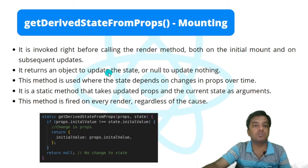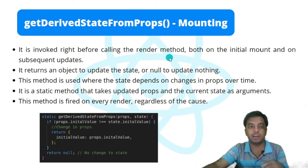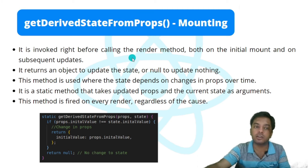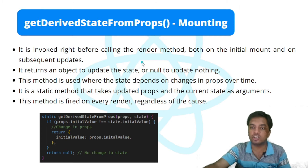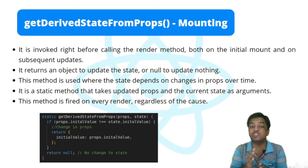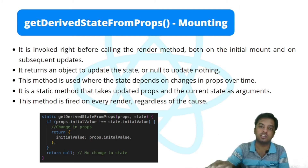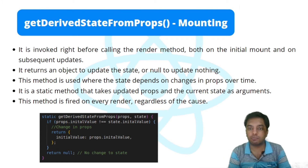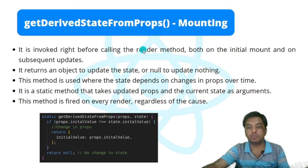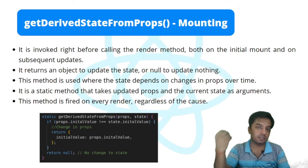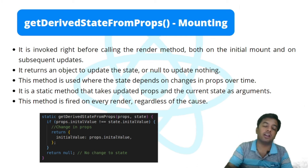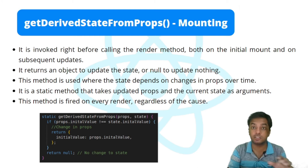The next method is getDerivedStateFromProps, also in the mounting phase. It is invoked right before calling the render method, both on the initial mount and on subsequent updates. It returns an object to update the state, or null to update nothing. This method is used when the state depends on changes in props over time. It is a static method that takes the updated props and the current state as arguments. It fires on every render regardless of the cause.